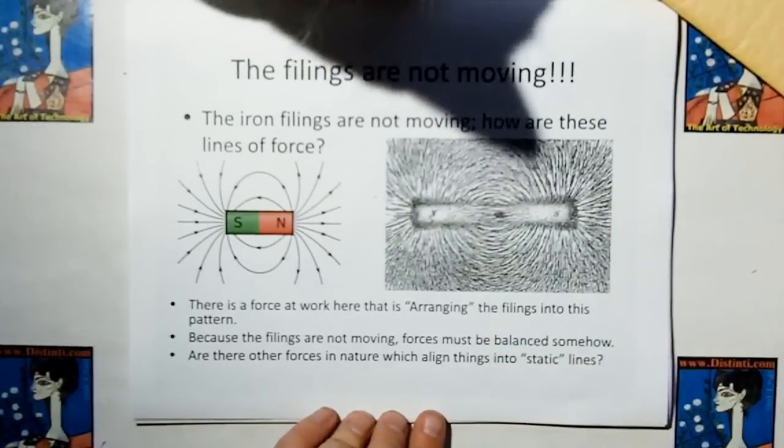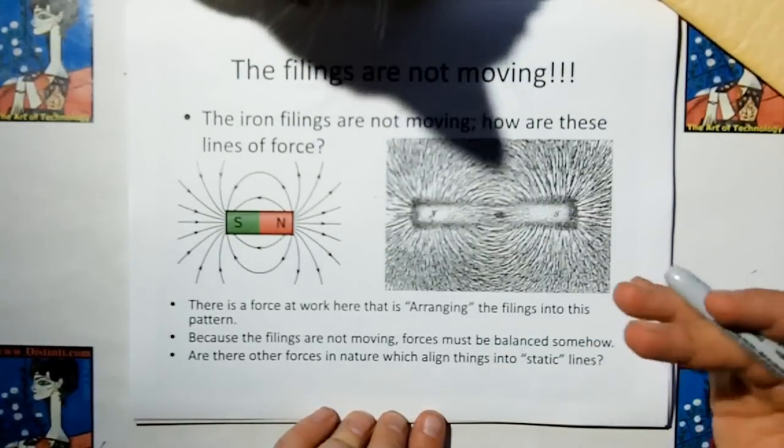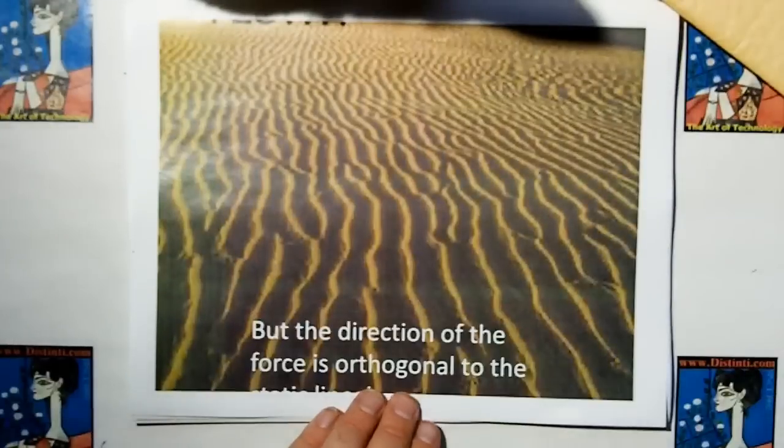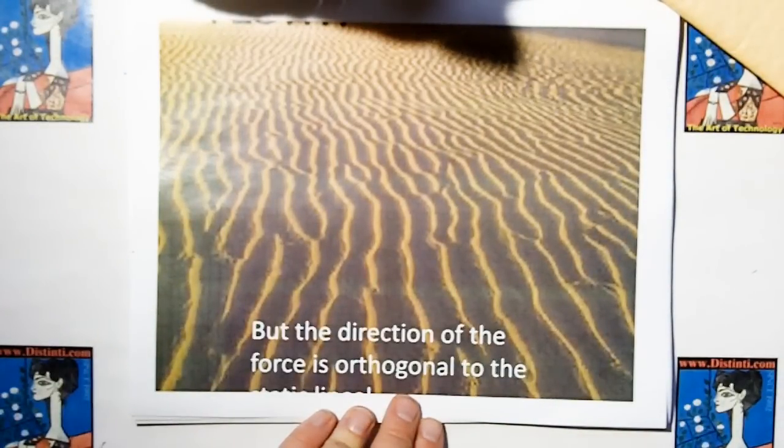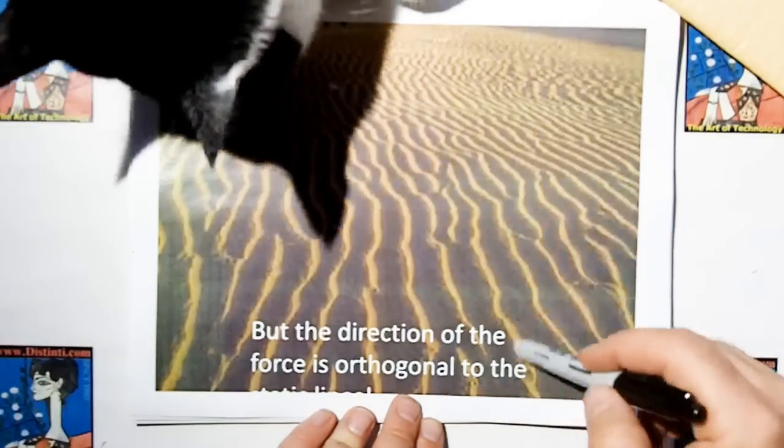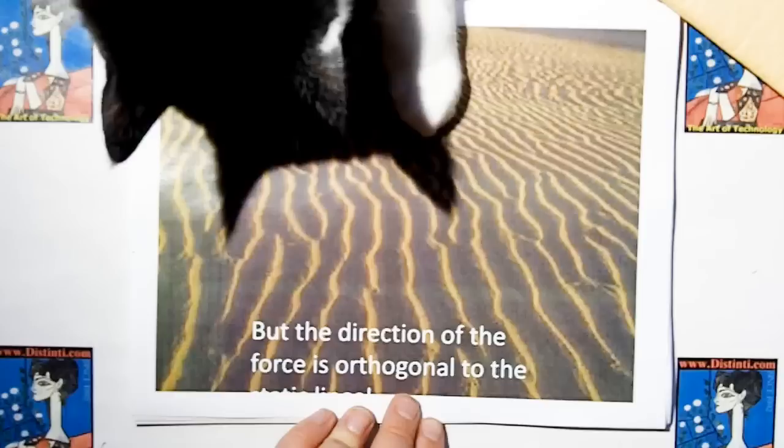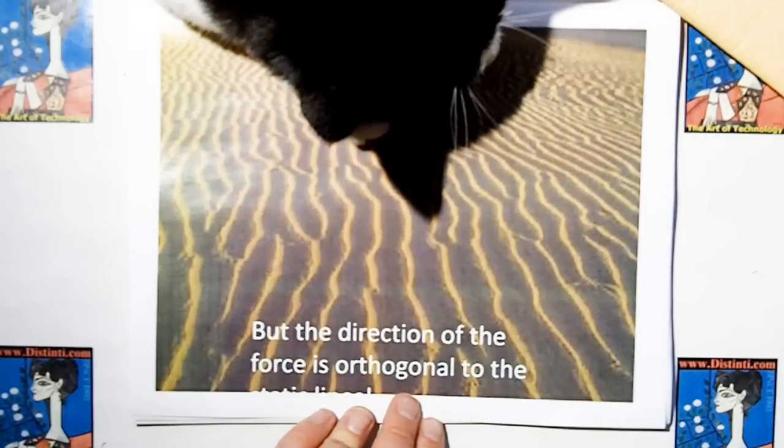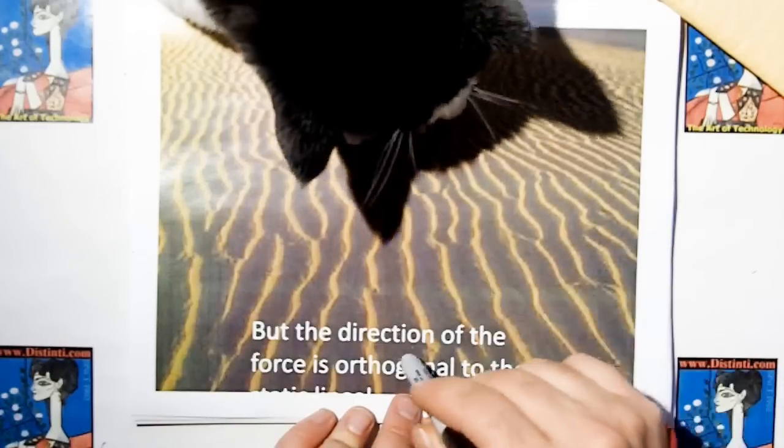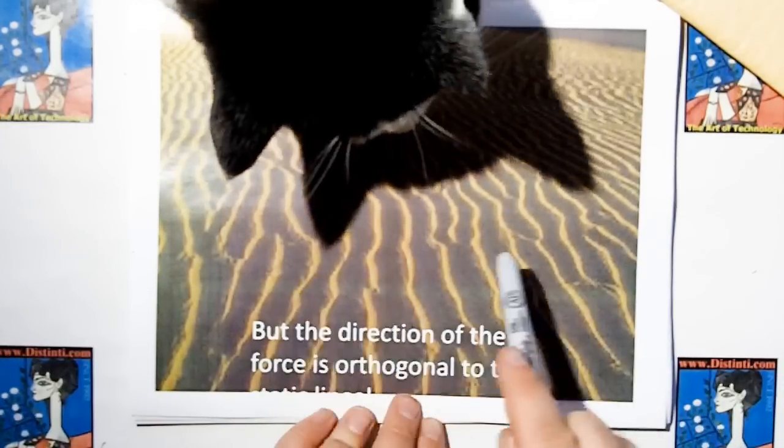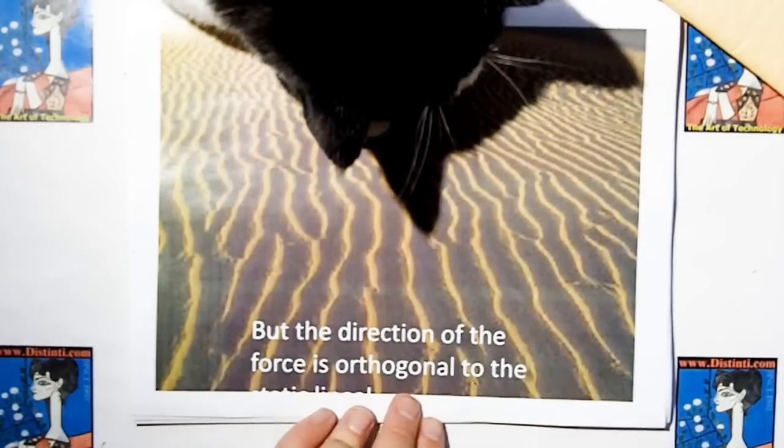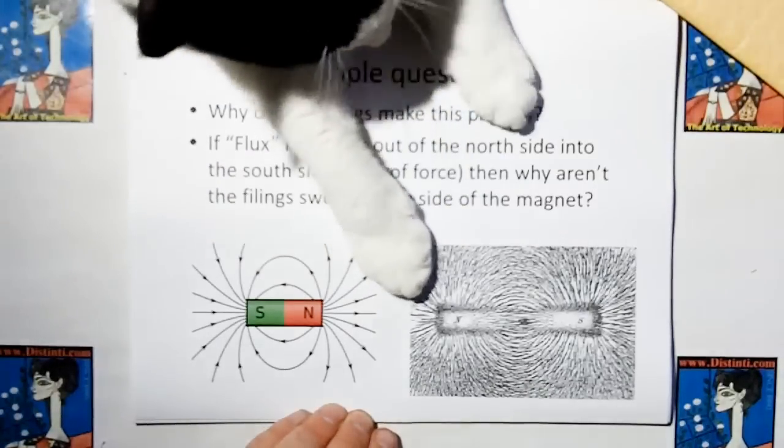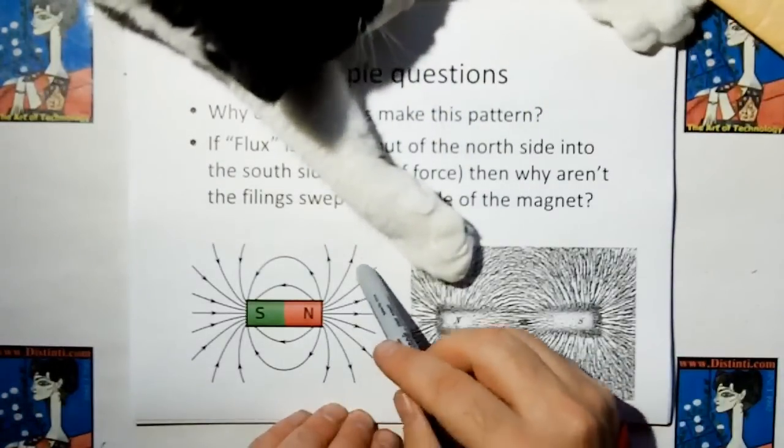Now the question is, if we go out into nature and we look for another force that can arrange stuff into nicely ordered lines, is there another example? And the answer is quite yes. If we look at the sand on the beach, we see that the sand dunes are aligned in nice little lines. If we weren't from this planet, we'd obviously say that the lines of force travel in this direction. But because we're on this planet, we know that the wind, which is the force that causes this, actually goes in the orthogonal direction. So we can be easily fooled by what we see.